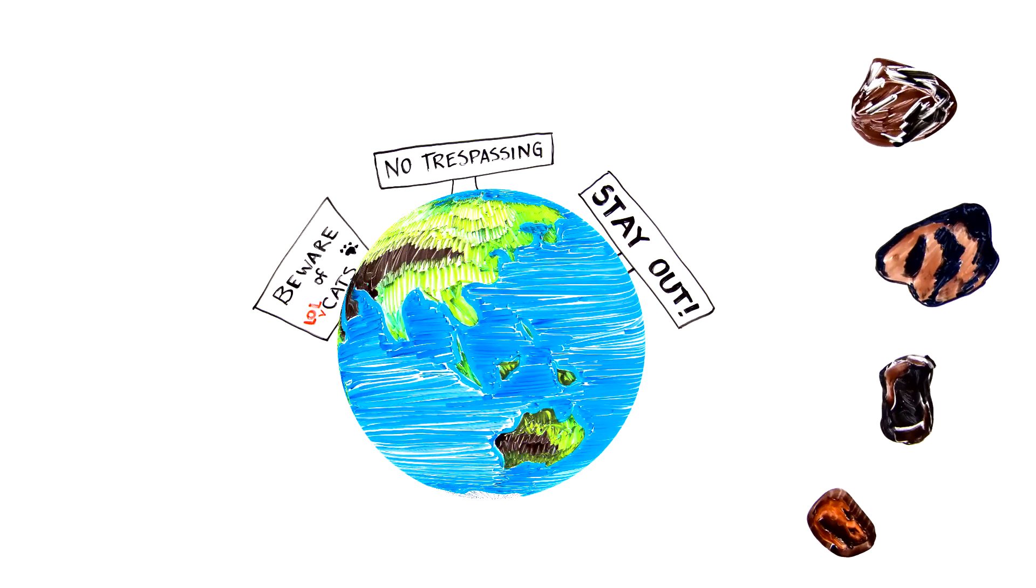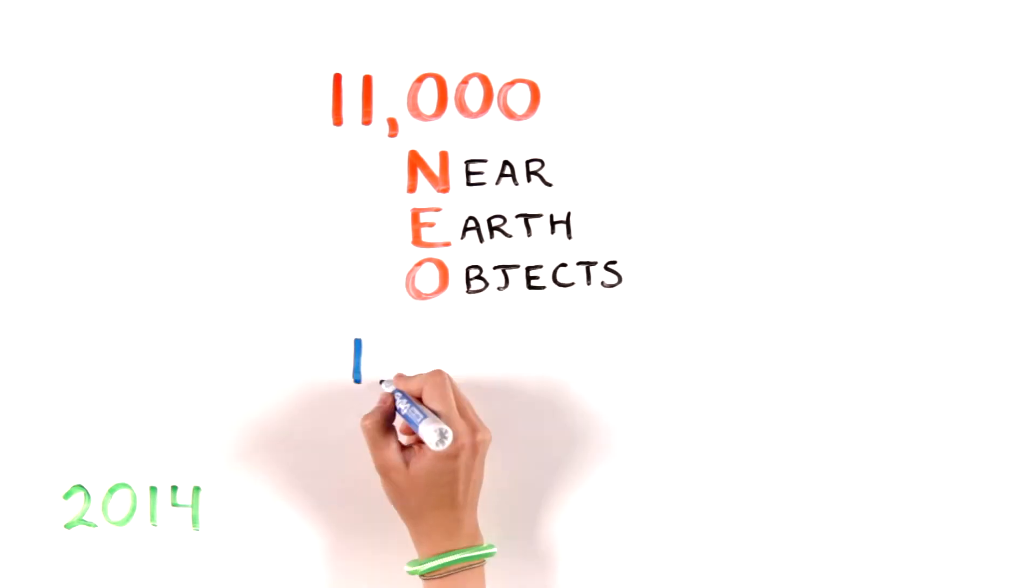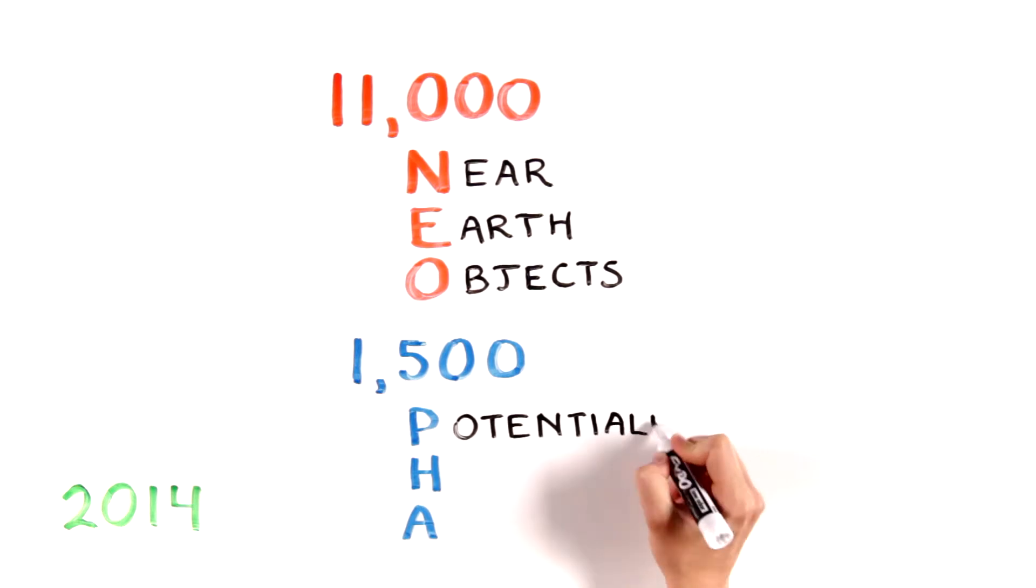A small fraction of these fugitives have orbits that send them into Earth's neighborhood. As of 2014, nearly 11,000 NEOs are known to exist in our neighborhood. Of those, astronomers are tracking about 1,500 potentially hazardous asteroids whose orbits bring them too close for Earth's comfort.